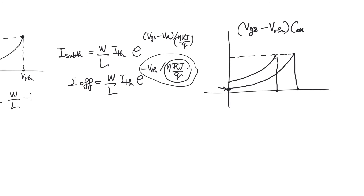The best way to manage subthreshold conduction is to manage how fast it drops — at the same threshold voltage, we want it to drop faster. This depends on eta · kT/q. Cooling the system helps through kT/q, but that is not very practical since managing heat is already difficult.